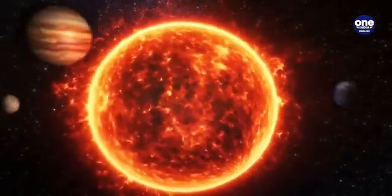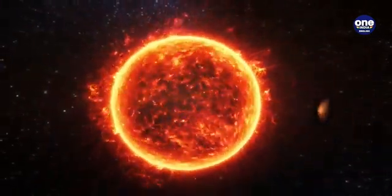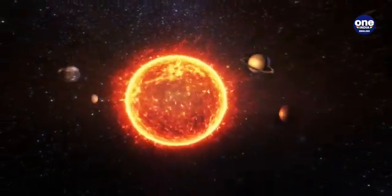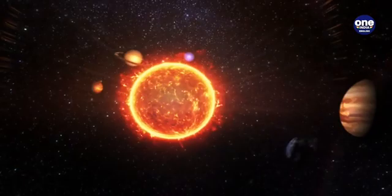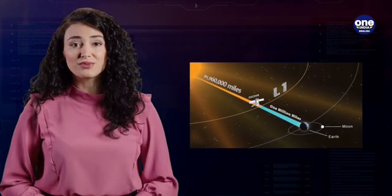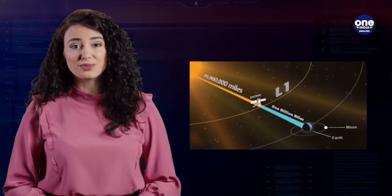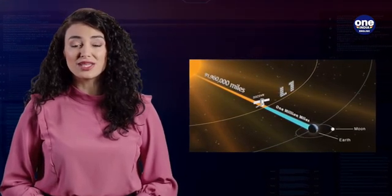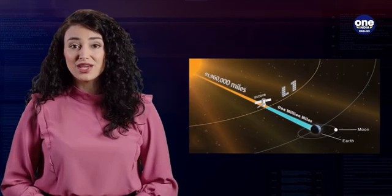In the case of the Earth-Sun system, Lagrange Point 1 L1 is located between the Earth and the Sun, about 1.5 million km away from Earth in the direction of the Sun. This point is on the line connecting the two bodies and is situated in the Earth's orbital path around the Sun.